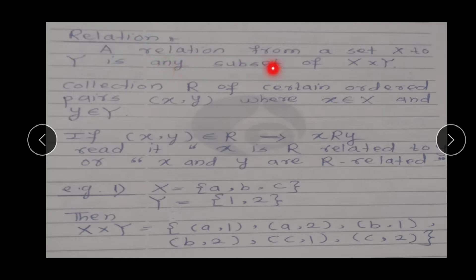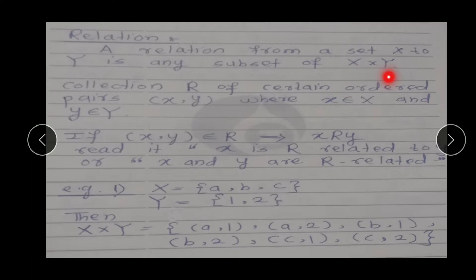A relation from a set capital X to capital Y is any subset of X cross Y. Here, X cross Y is the Cartesian product of X and Y, and we know that the elements of the Cartesian product are in ordered pair form.